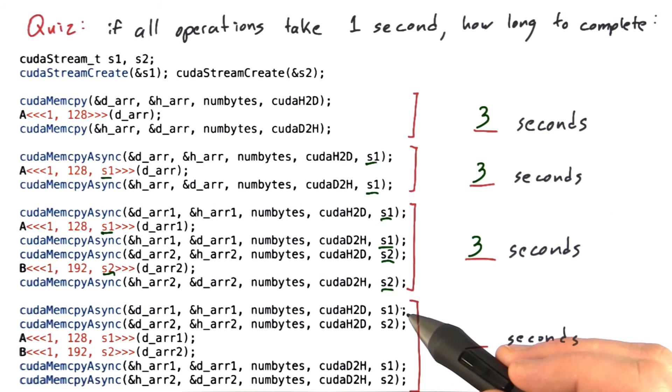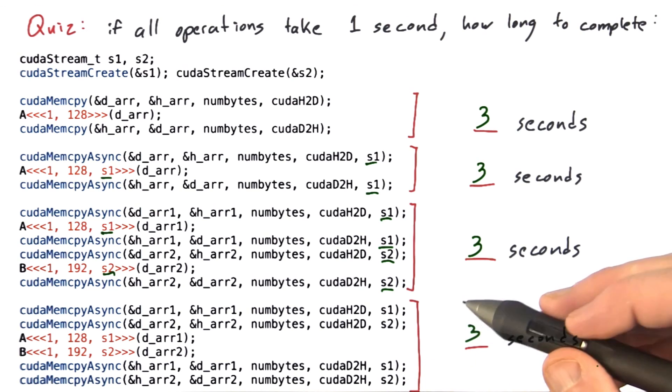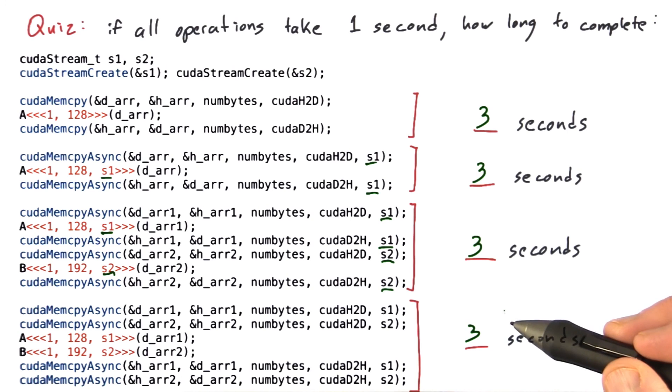The final example is the same operations, just reorganized. So in this case, we issue both memcopies in stream 1 and 2, we launch both kernels in stream 1 and 2, and we issue both memcopies back in stream 1 and 2. So rearranging these things shouldn't make a difference. The minimum time that this could take is still three seconds.